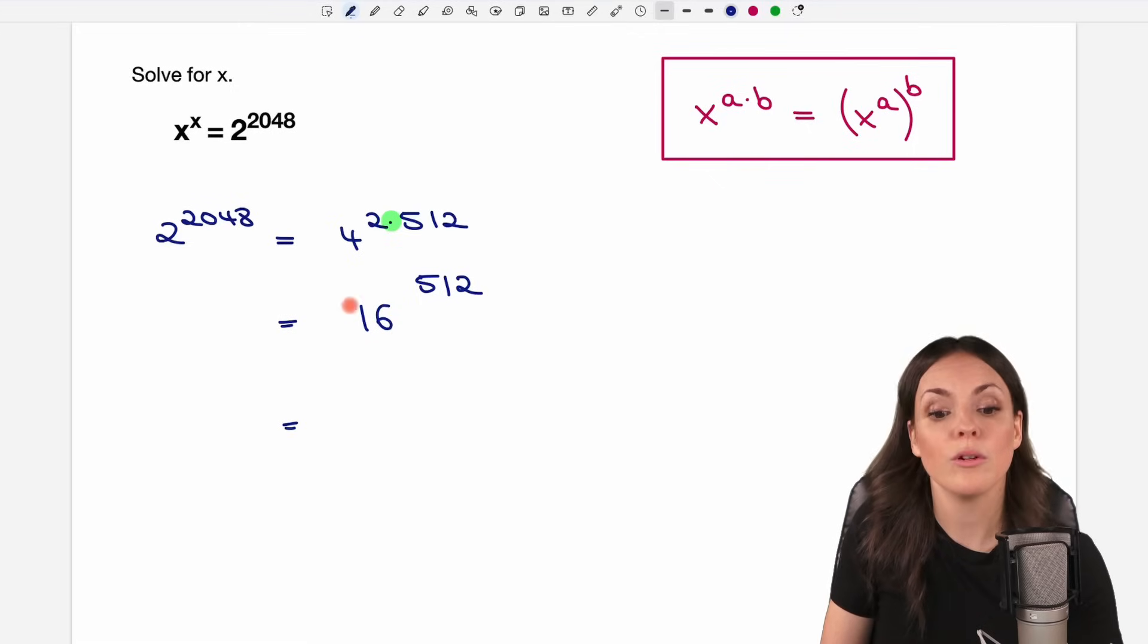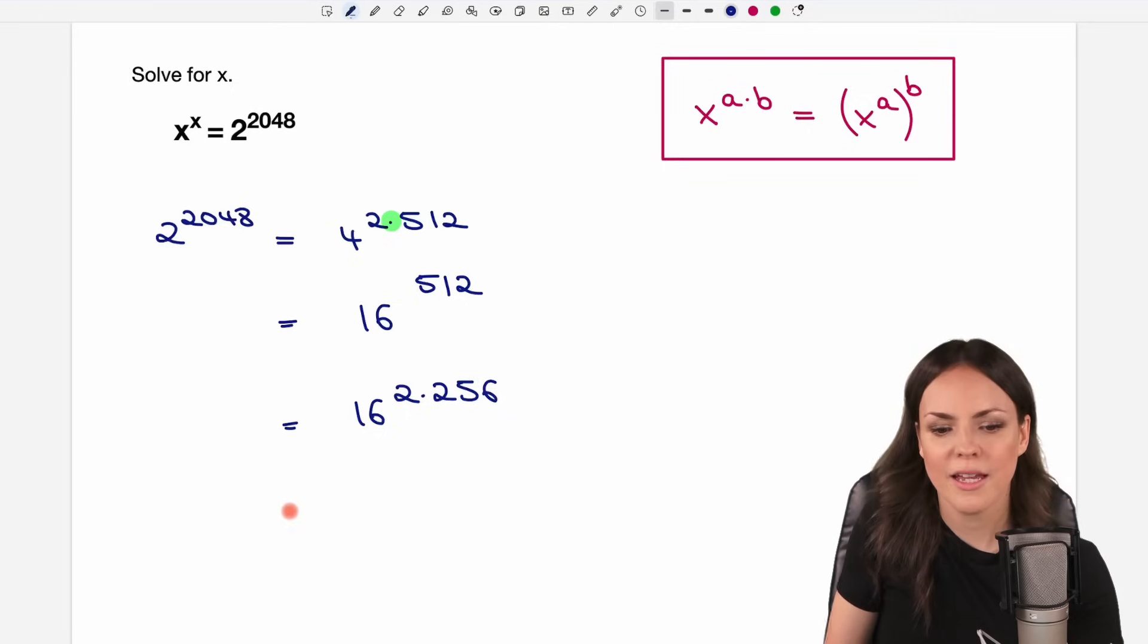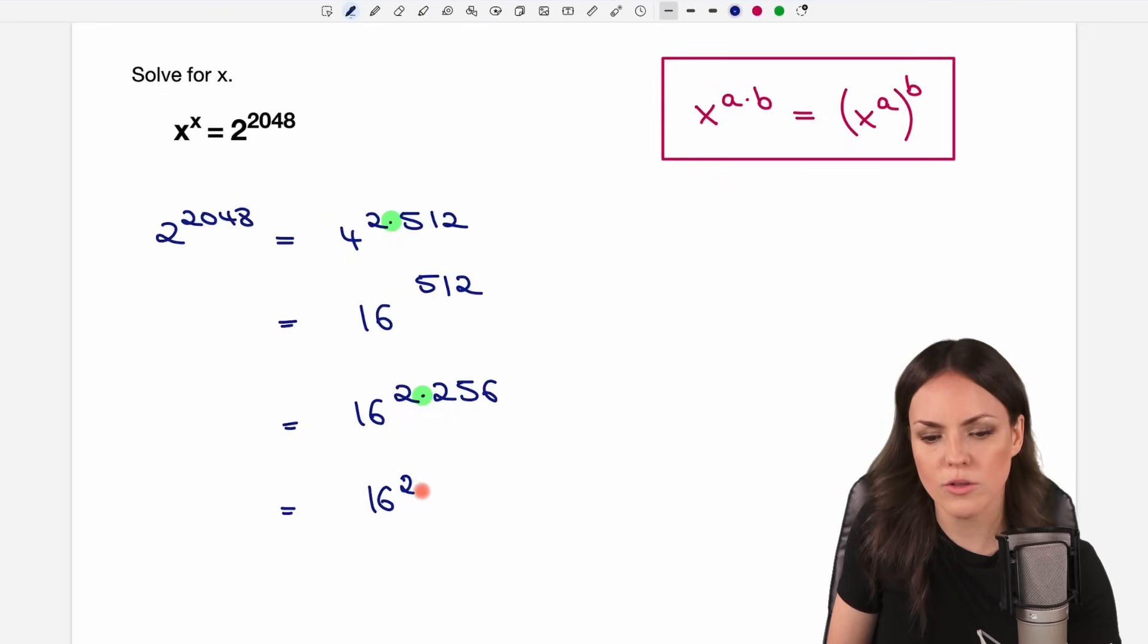The base became larger, the exponent became smaller. Not yet the same numbers, so let's repeat this process. We keep the 16 as a base. This number is still an even number so we can write it as 2 times 256 this time. We write this as we take the base, the 16, raise it to the first part of this product, we raise it to the power of 2, we write this in parentheses and raise it to the power of 256.